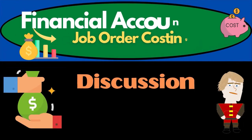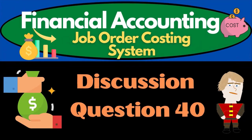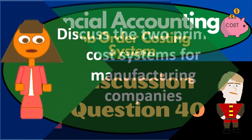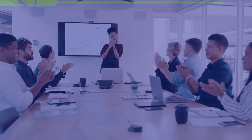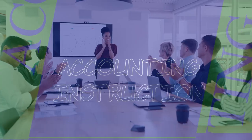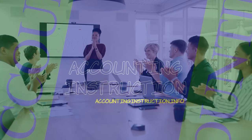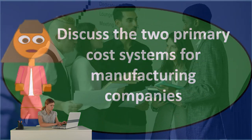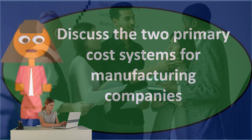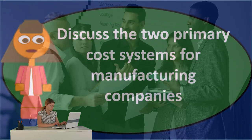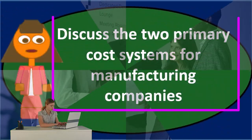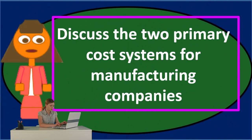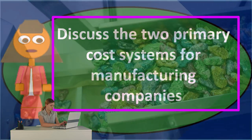In this discussion, we will discuss the question: discuss the two primary cost systems for manufacturing companies. When we see a discussion question or essay question like this, we can think through what a manufacturing company is.